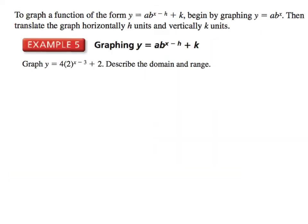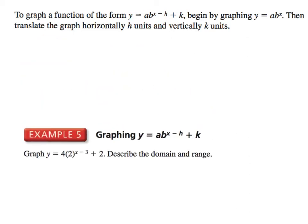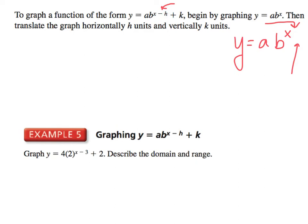Now, this is how you translate an exponential function. This is very similar to what you learned with parabolas. If you started with y equals a times b to the x power and slid it left, right, up, or down, it's going to change two things: the horizontal shift — which affects if it goes left or right — and at the end, the plus k, whether it goes up or down. Translate the graph horizontally h units — and remember, it's backwards. If it's plus 5, you actually go left 5. If it's minus 3, you go right 3. And vertically k units: positive goes up, negative goes down.